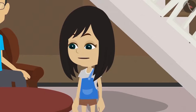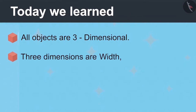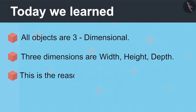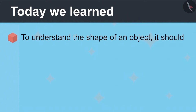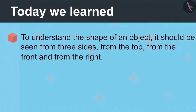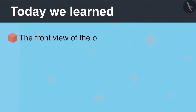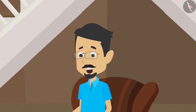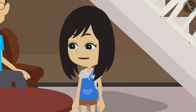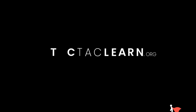Now I have fully understood that all objects are three dimensional. The three dimensions are width, height, and depth. Because of this, objects appear to be of different shapes when viewed from different sides. To understand the exact shape of an object, one must look at it from three sides: from the top, the front, and the right side. The top view appears when looking from the top, the front view when viewed from the front, and the side view when viewed from the right side. Very well! Now you both play and I'll do my work. Okay papa, we will go and play and tell everyone about 3D in school tomorrow!